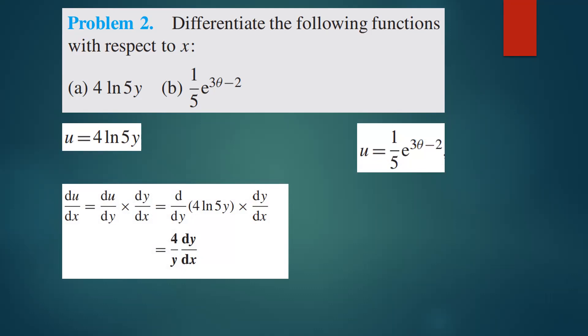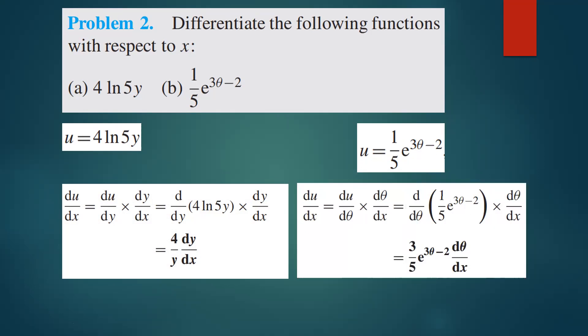For the next part, you say u equals that function. You can introduce ln on both sides, but that takes more time. The direct way is to find the derivative of the power, multiply it by the original function, then multiply by dθ/dx, since we're differentiating everything with respect to x. The solutions are in the slide — I'll send them so you can go through them.